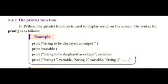In Python, the print function is used to display the result on the screen. The syntax for print is: print with string to be displayed as output in quotes, print of variable, print with string to be displayed as output in quotes comma variable, or print with string 1 comma variable comma string 2 comma variable comma string 3, etc.